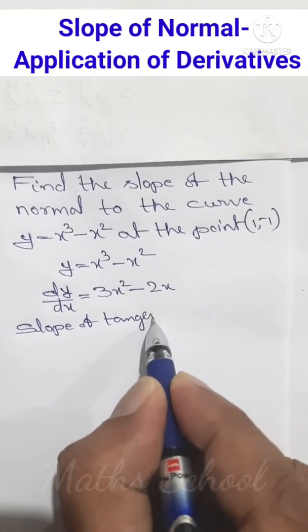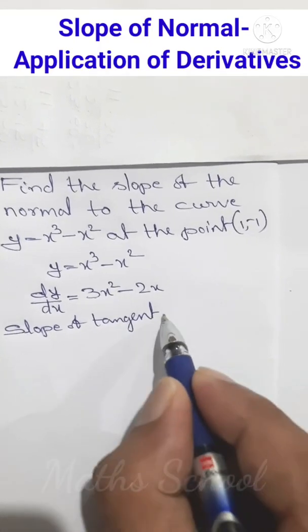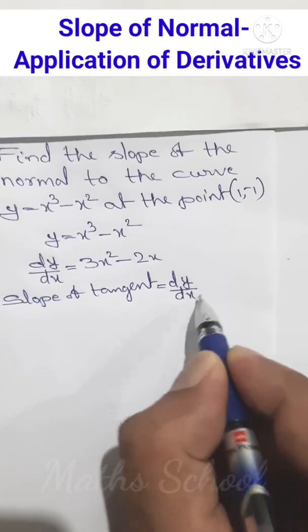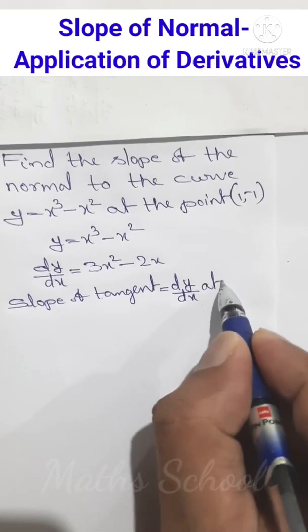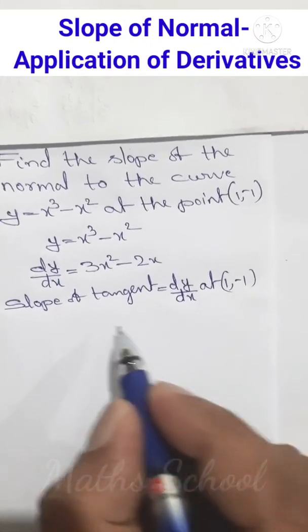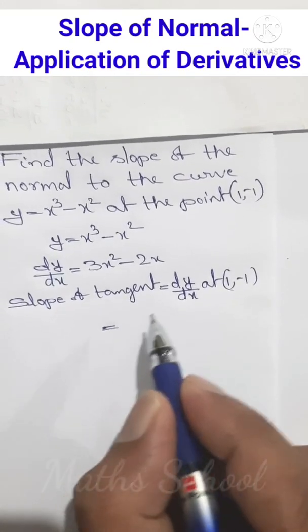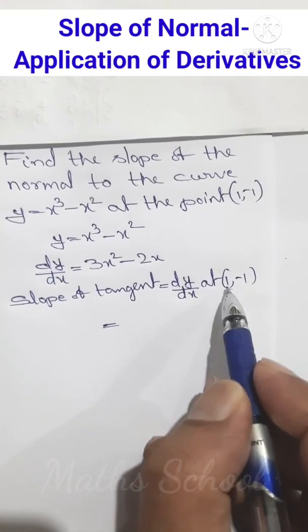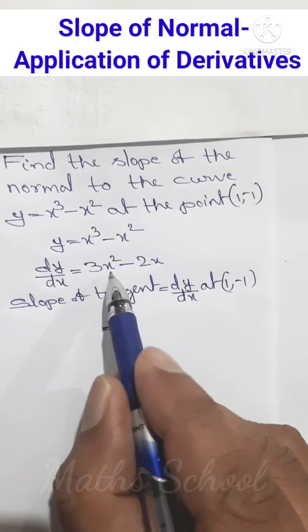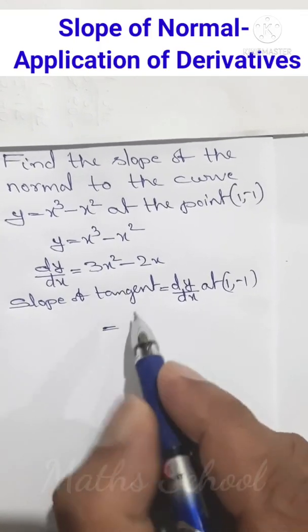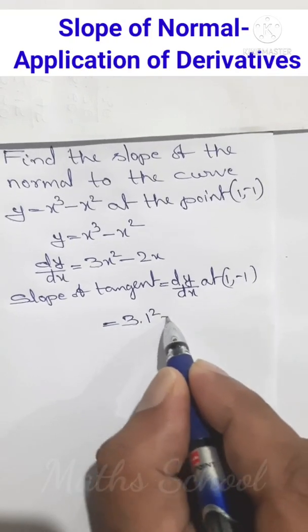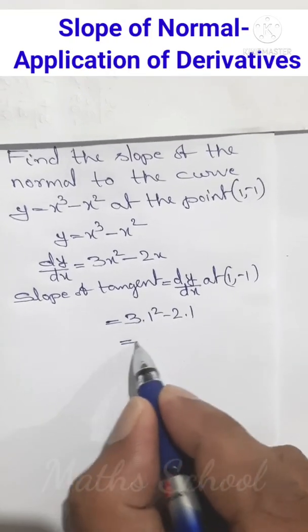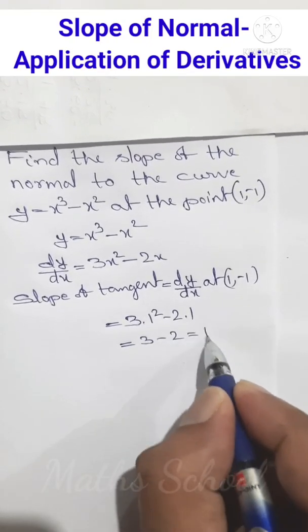The slope of the tangent at (1, -1) equals dy/dx evaluated at x = 1. Substituting x = 1, we get 3 × (1)² - 2 × 1 = 3 - 2 = 1.